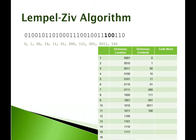Then we step to the next digit. A 1 isn't unique, 10 is not unique, but 100 actually is. Note that we're not necessarily increasing the number of digits each time — we're looking for that unique pattern. So 100 is unique, so we record that and then step to the next one. Finally, 110 — is that one unique? Yes, it is. So now we've recorded all of these.